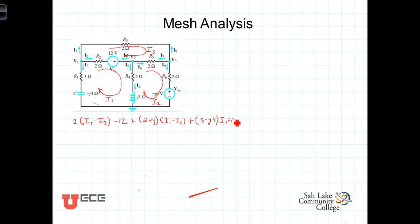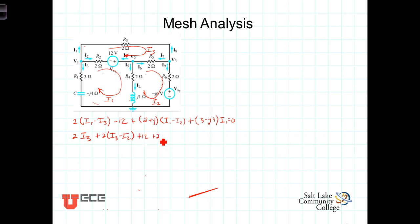Going around the top loop, starting in the upper left-hand corner and going in the direction of that mesh current, we have 2 times I3. Coming on around we have plus 2 times I3 minus I2. Across the voltage source we add the voltage drop of plus 12, and then plus 2 times I3 minus I1. The sum of those terms equals 0.